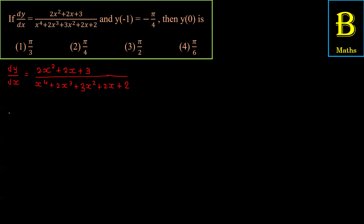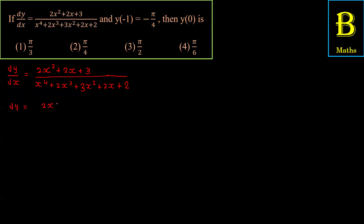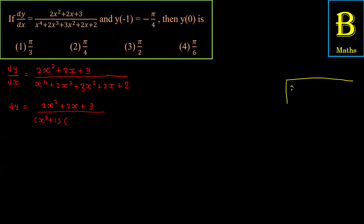dx को सामने की side भेज देते हैं तो dy = (2x² + 2x + 3) / (denominator) dx हो जाएगा। Denominator को factorize करेंगे — एक factor ले लेते हैं x² + 1, तो division method से x⁴ + 2x³ + 3x² + 2x + 2 को divide करेंगे।